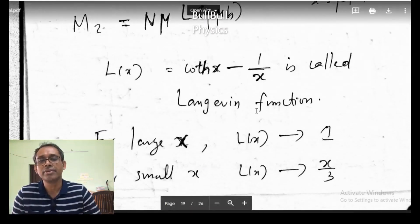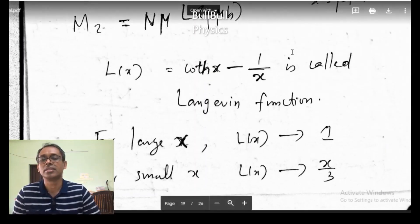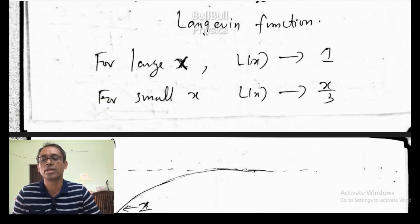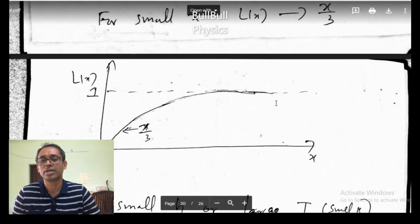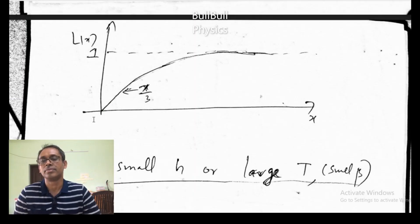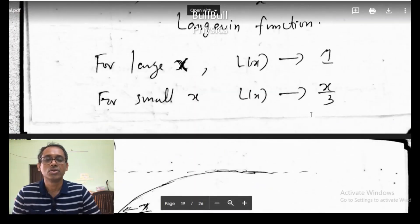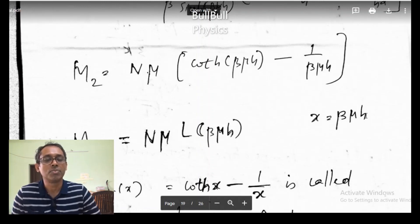Now, for the Langevin function: for large x, L(x) tends to 1, and for small x, L(x) tends to x/3. This is how the Langevin function varies — for large x it tends to 1 and for small x it varies as x/3. Suppose that H is very small and temperature is large — H is small and temperature is large — so x will be very small.